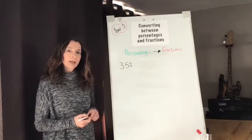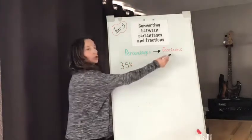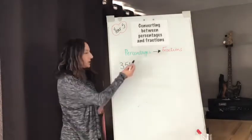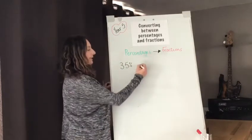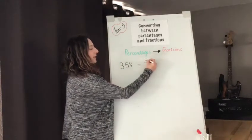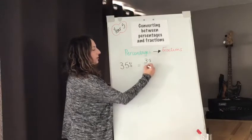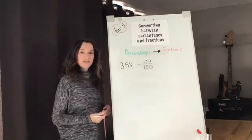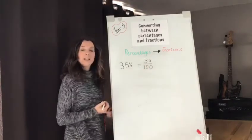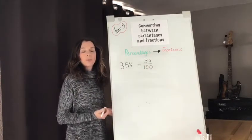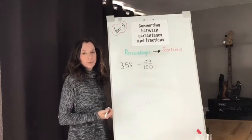So let's start by going from a percentage to a fraction. If we start with 35%, we know that that means 35 out of 100 or 35 hundredths and that would be a correct answer but we want to simplify it, we want to give it in the simplest form as a fraction.